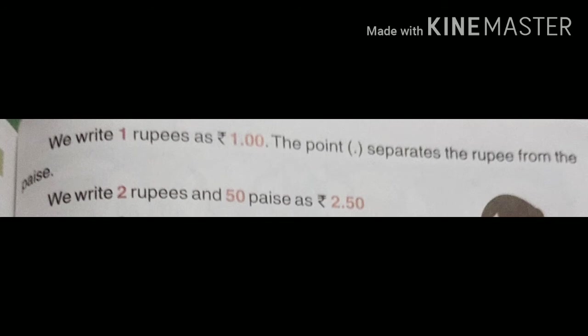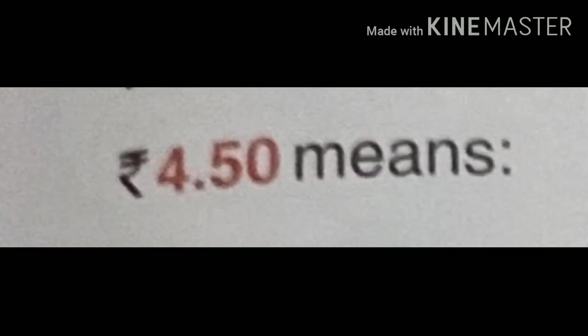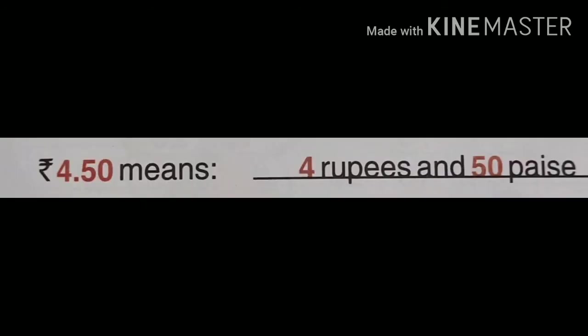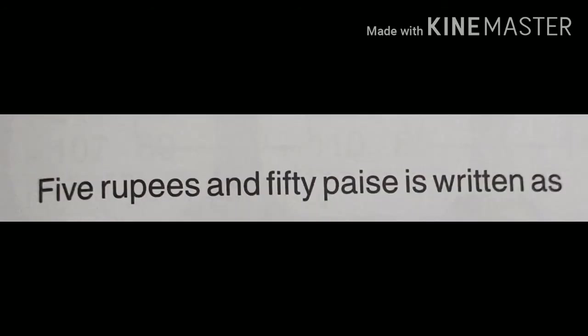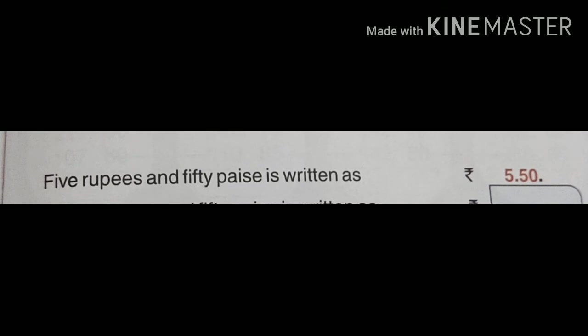So, what does the decimal point do? It separates rupees and paisa. For example, 2 rupees 50 paisa is written as 2.50 — rupees before the point and paisa after the point, written separately. Similarly, 4 rupees 50 paisa is written as 4.50. We use this dot just to separate rupees and paisa.